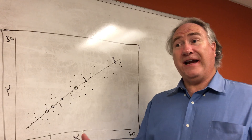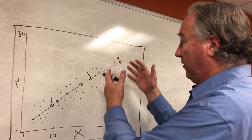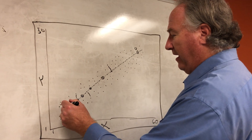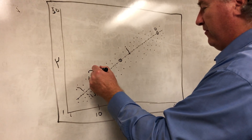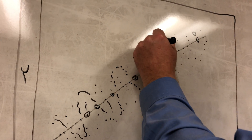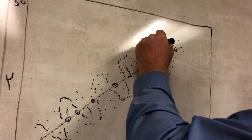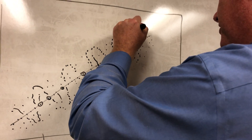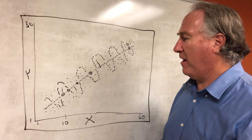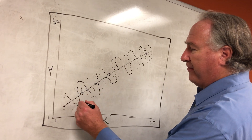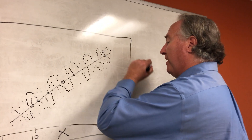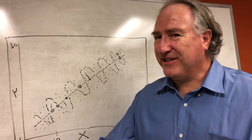Now, what we can see here is that the assumption of homoscedasticity has been met. The variability of these observed values around the regression line — which always consists of the corresponding predicted value — is about the same over the entire length of the regression line. When you have that, you have homoscedasticity and you have met the assumption.